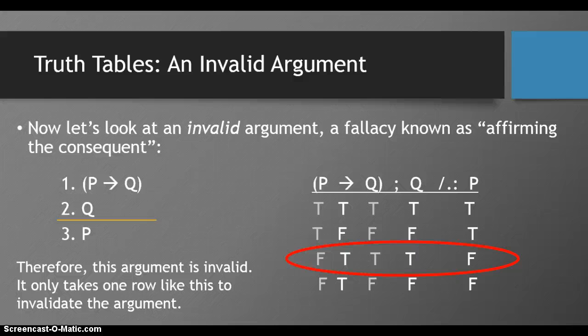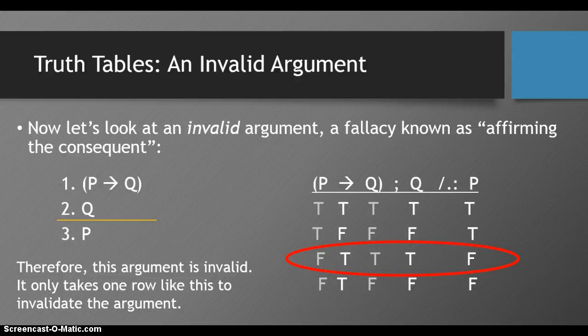And it only takes one row to invalidate an argument. It's important to remember that even if all of the other rows don't invalidate the argument, if one row does, the entire argument is invalid.